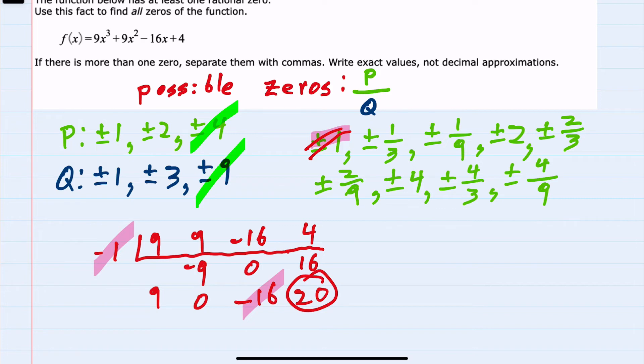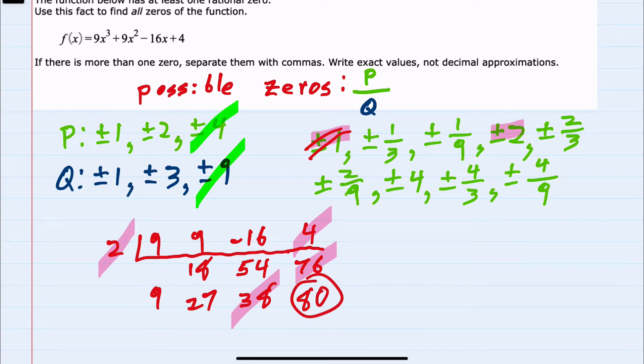Instead of moving on with the fractions, I'm going to jump over to my next whole number and try positive 2. 2 times 9 is 18. Adding gives us 27. 2 times 27 is 54. Adding gives us 38. Multiplying 2 and 38 is 76. So again, I'm not getting 0 here. I do have a remainder, so positive 2 doesn't work.